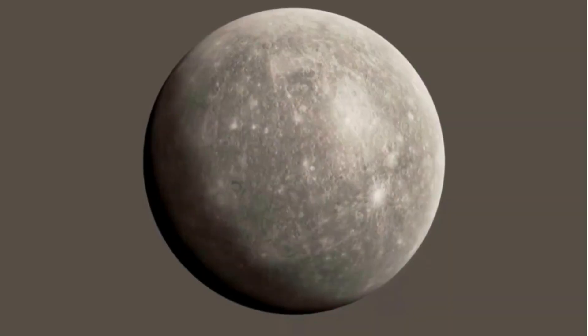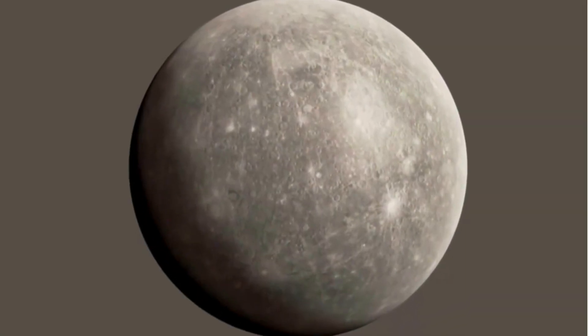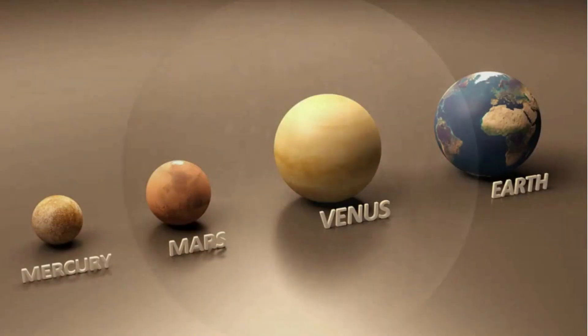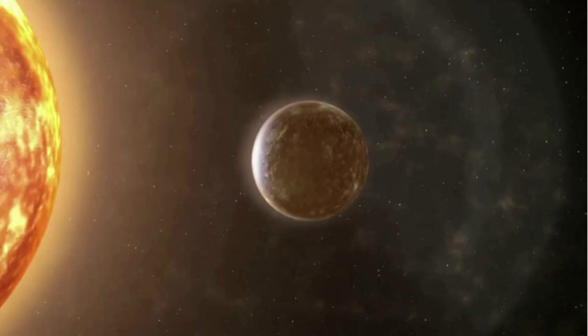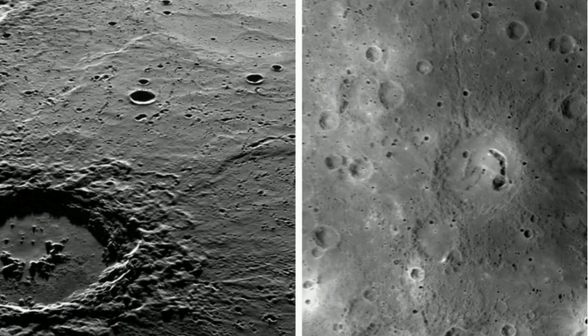Mercury is about one-third the size of the Earth. It has a central core, a rocky mantle, and a solid crust. Its surface resembles the Earth's moon, scarred by many impact craters.